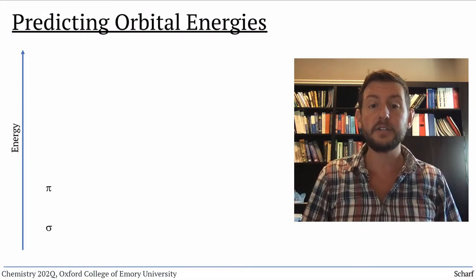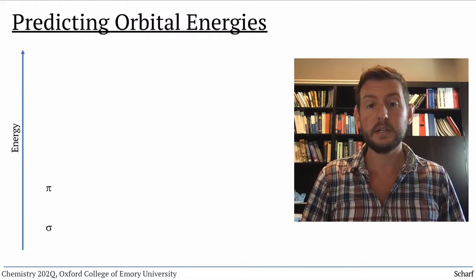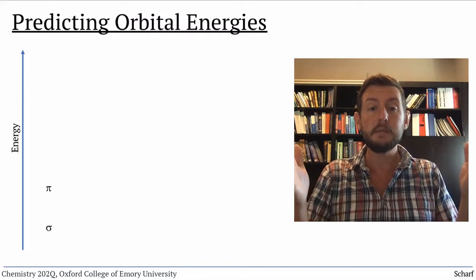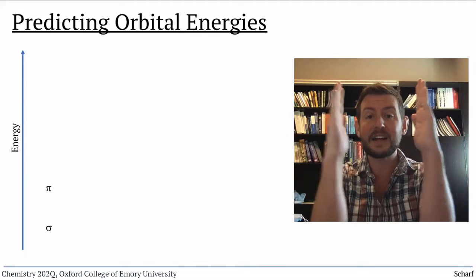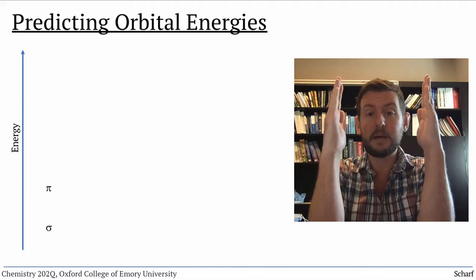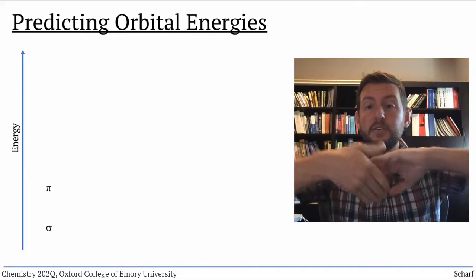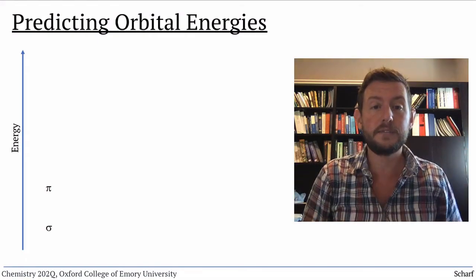Slightly higher in energy are pi bonding orbitals. These aren't as stable as sigma bonding orbitals, because side-to-side overlap that's in pi bonds is weaker than the direct overlap of sigma bonds.